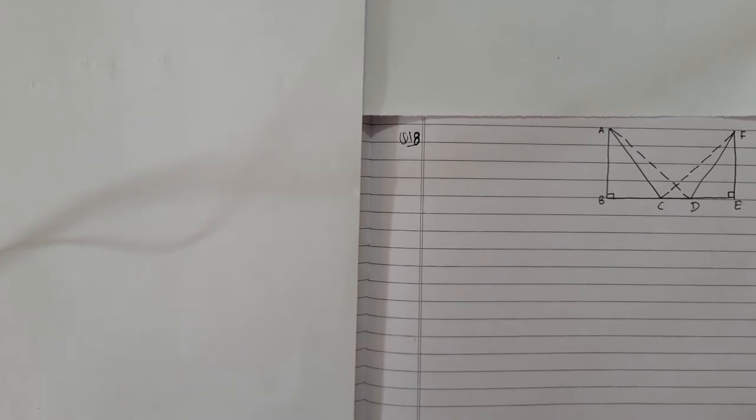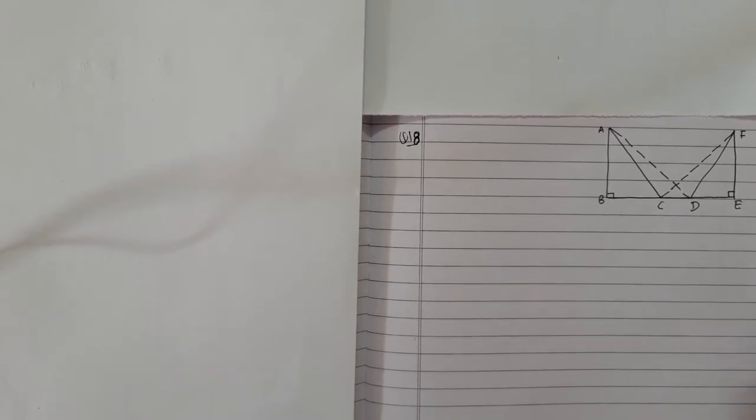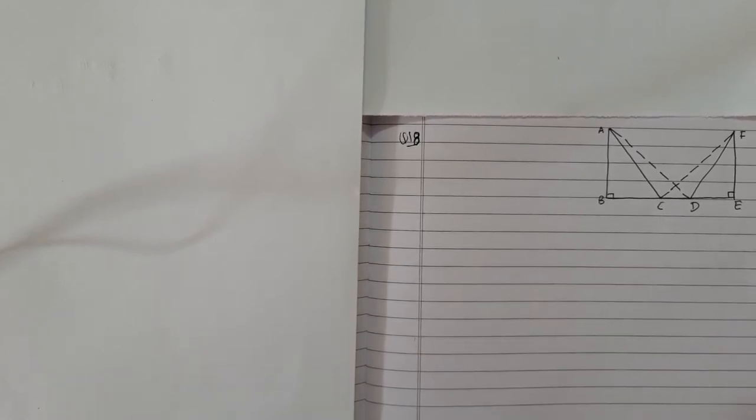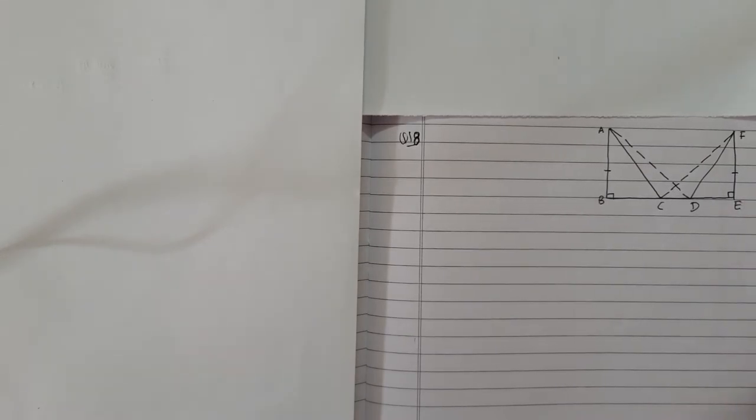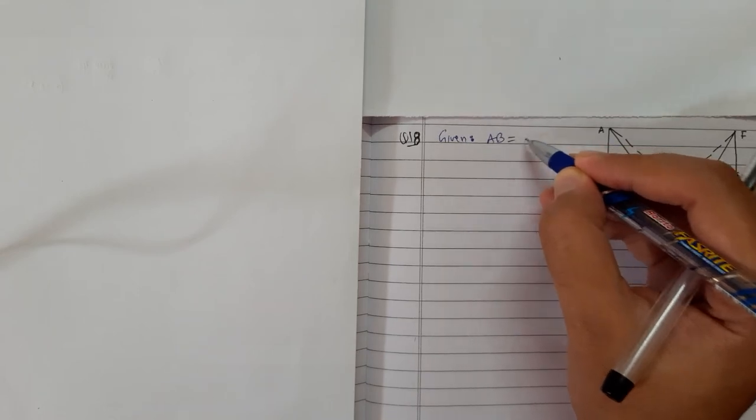In the next question, we have a figure and the first thing given is AB equals EF. Mark whatever is given in the figure so you don't have to read the question again and again. First thing: AB equals EF.